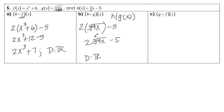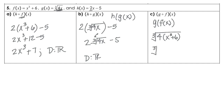For part c, that is g of f of x, so I'm substituting function f into g. g is the cube root of 4x, so that's going to be the cube root of 4 times x cubed plus 6, giving us the cube root of 4x cubed plus 24. Since that is an odd root, the domain will be all real numbers.